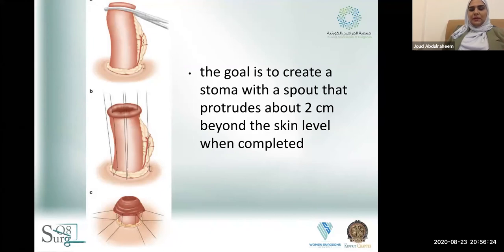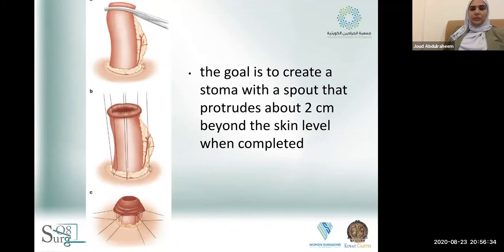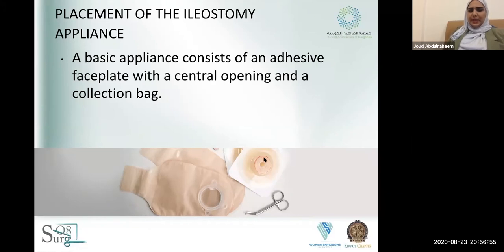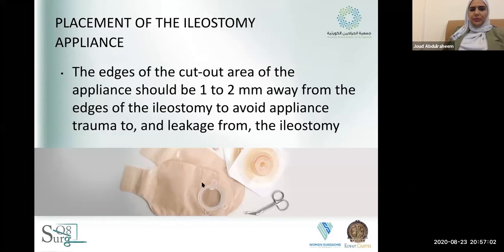The end result is a healthy viable protruded stoma that rises two centimeters beyond skin level when completed. After finishing, apply your appliance. The appliance is either one-piece or two-piece: one piece is an adhesive faceplate with a central opening, and the other part is a collection bag. Ensure the central cut opening is one to two millimeters away from the edges of the ileostomy to avoid trauma or leakage.